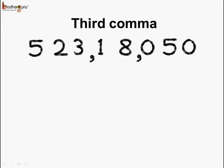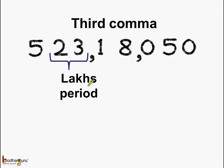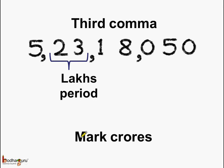Now if we talk about the third comma — we already have the first comma after the units period and the second comma after the thousands period. Then we have the last period, which consists of digits at the lakhs and ten lakhs place values. So the third comma is placed after the last period, and it marks crores. Here we have five crores.